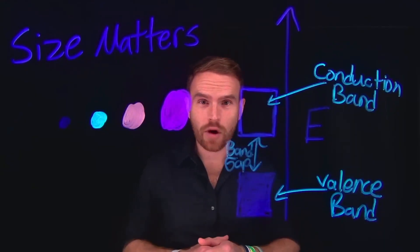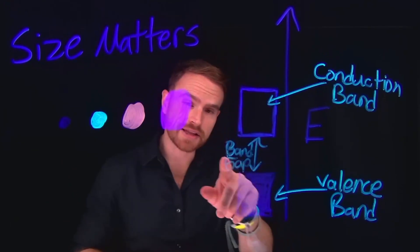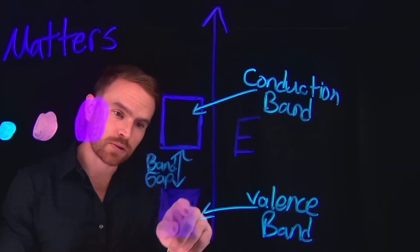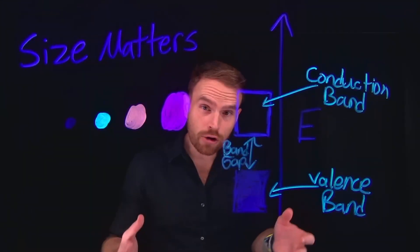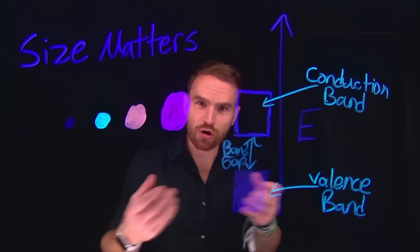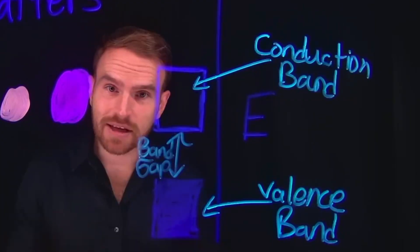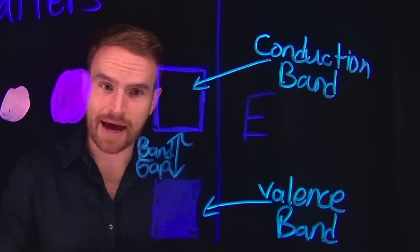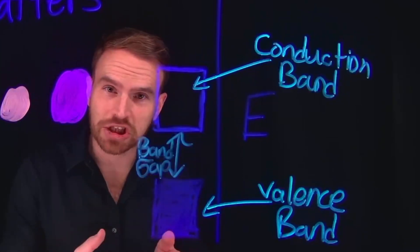One of the most important things about quantum dots is that their size affects their properties, specifically things like the band gap. The band gap is the energy difference between the valence band and the conduction band in any material. For large molecules and large particles and large materials, this band gap is going to be fixed. So for example, silicon has a very specific band gap, or the energy difference between the valence band and the conduction band, and that is stationary and it's unable to change.